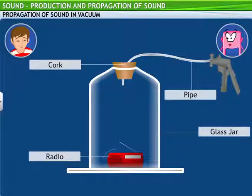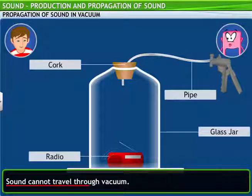Now listen carefully. Can you hear the radio play now? Yes. Now let's see what happens if the air is sucked out of the jar through the pipe. Can you make out what's happening to the sound? Yes, the sound is getting feebler. Exactly. You can observe that as the air in the jar decreases, the sound also gets feebler. Therefore, clearly, sound cannot travel through a vacuum.